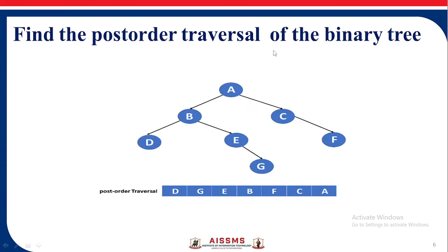Now find the post-order traversal of the binary tree. We first see the left subtree, applying the algorithm left-right-root. Then we move on to the right subtree, again applying left-right-root, and then visit the root. We get D, then moving to the right part we get G, E, B, then moving to the right side we get F, C, A. So the post-order traversal sequence is D, G, E, B, F, C, A.